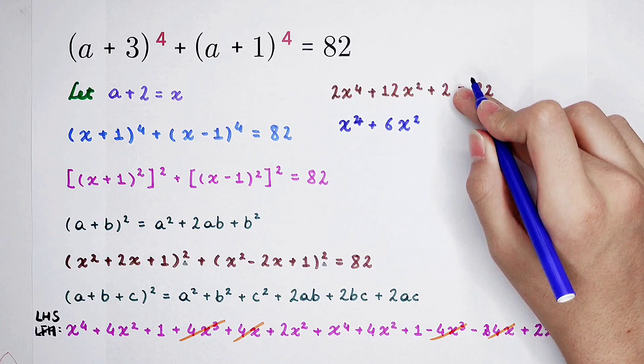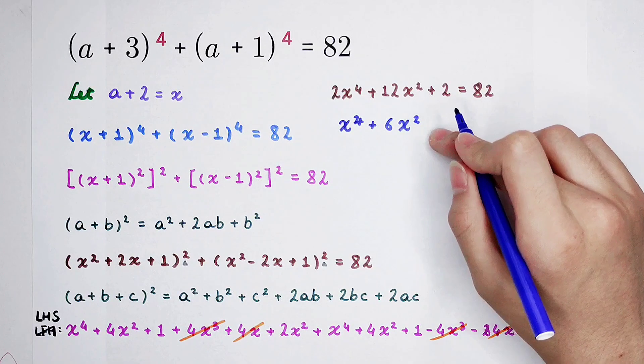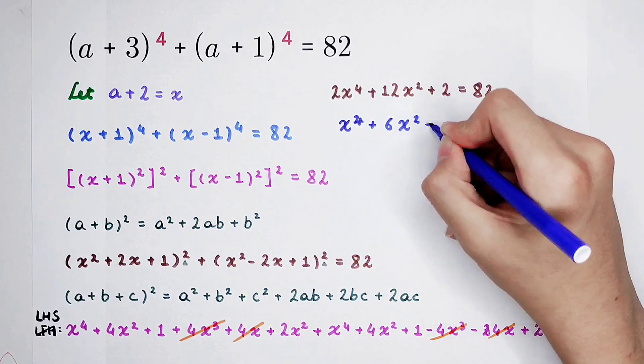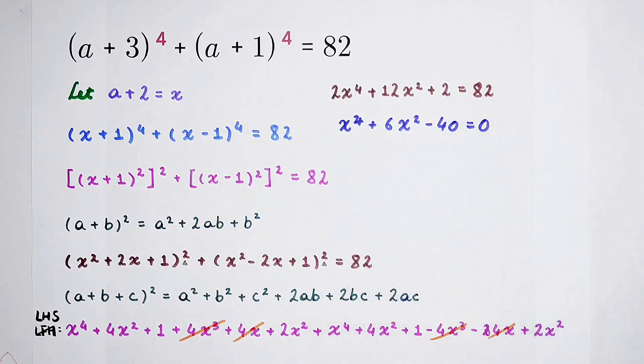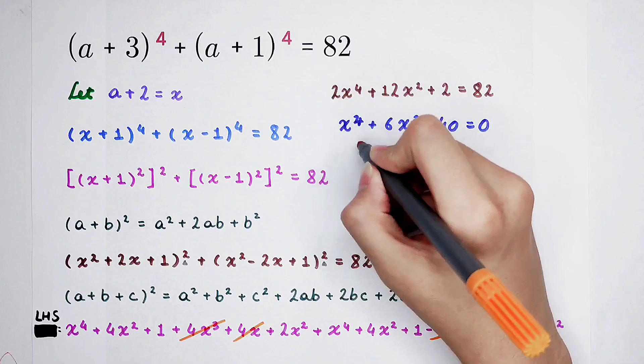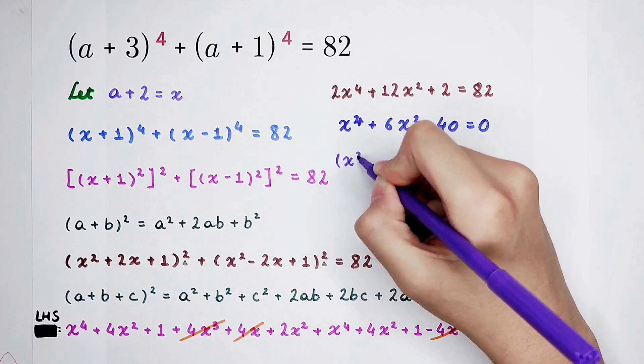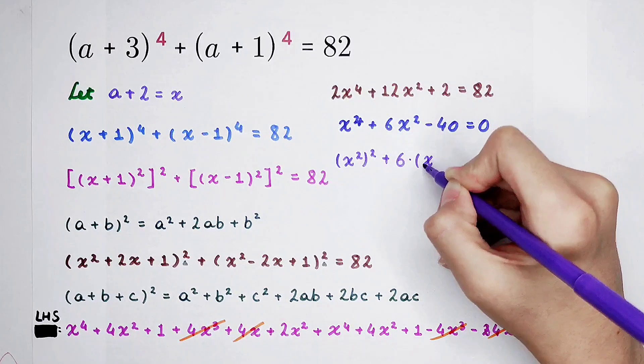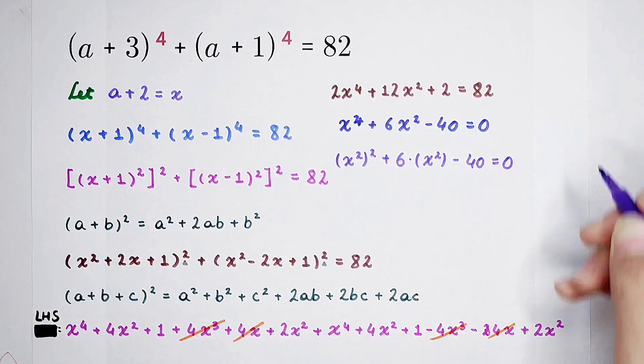And then, subtracting 41 from both sides: 1 minus 41 is minus 40. It is x squared squared plus 6 times x squared minus 40 equals 0.